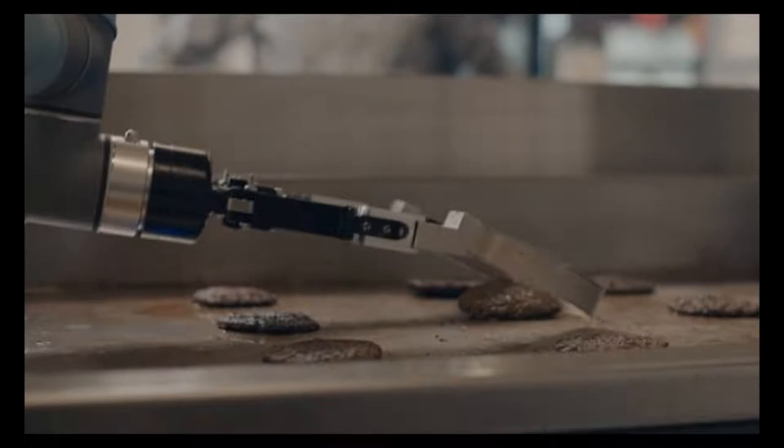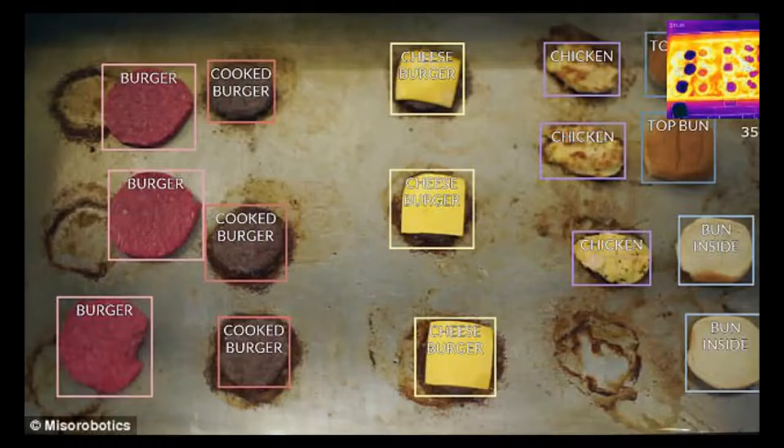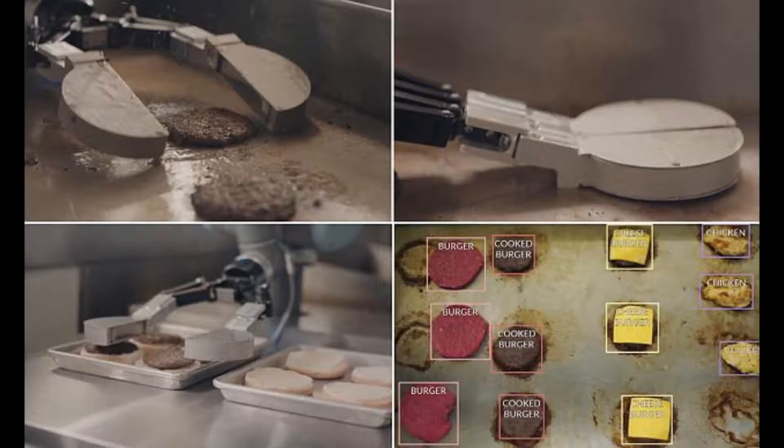But in America, they're already getting started. A burger-flipping robot by the name of Flippy began his first shift yesterday at a restaurant in Pasadena in Los Angeles. And it's the first of dozens of locations for the system which is destined to replace human fast food workers.